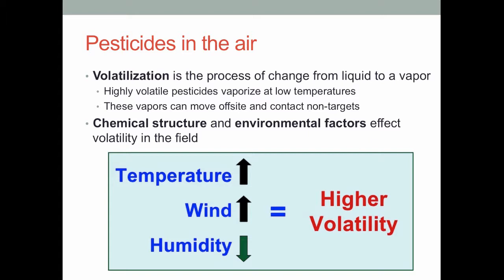As far as pesticides in the air, there are a number of ways they can enter the atmosphere. One of the most important is volatilization — from the root 'volatile,' meaning rapidly turning into a gas. Volatilization is the process of a chemical going from a liquid state to a vaporous state, essentially the process of pesticides evaporating. A pesticide is considered highly volatile when it vaporizes at very low temperatures, such as temperatures we typically see in the field. These vapors can move on the wind or hang out in the general area of the crop, impacting organisms or neighboring crops.